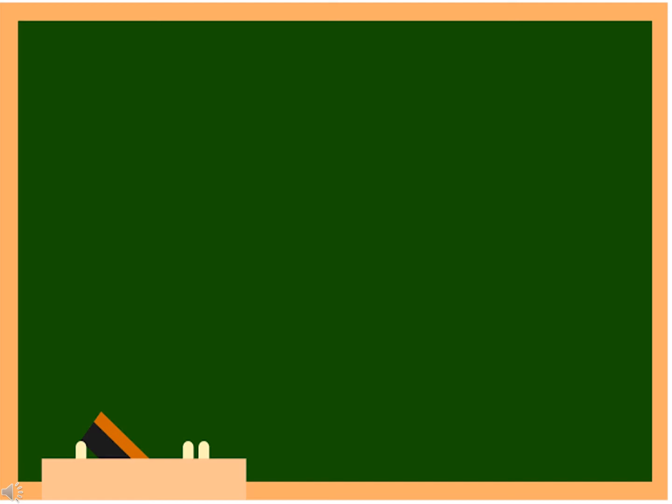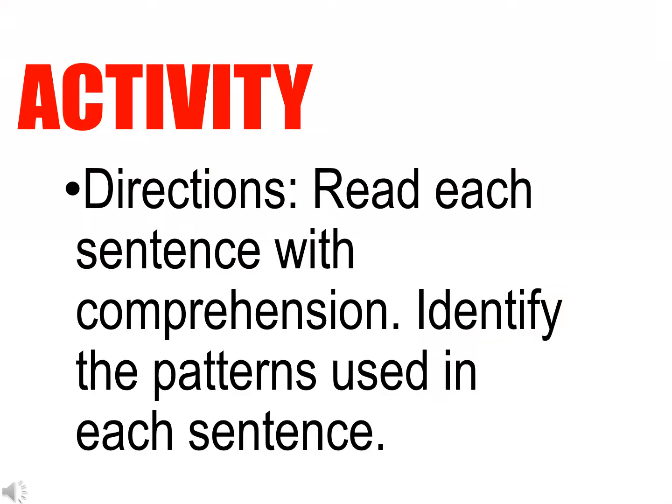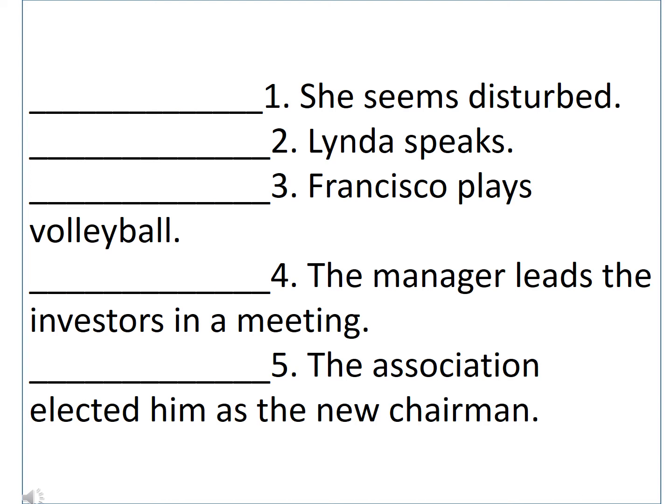To test your understanding about our lesson, I prepared a short activity. Directions: Read each sentence and identify the pattern used. Number 1: 'She seems disturbed.' She is our subject. Seems is a linking verb. And disturbed is a subject complement. Therefore, the pattern of this sentence is SLVSC.